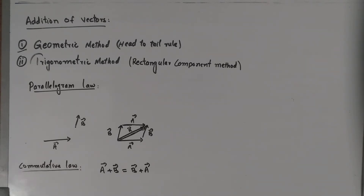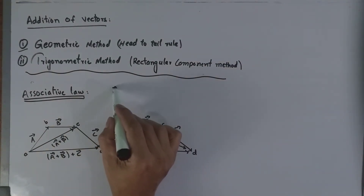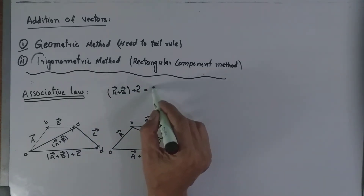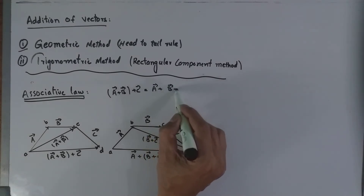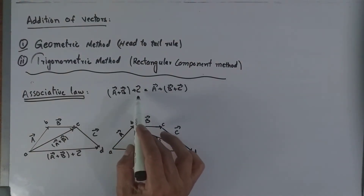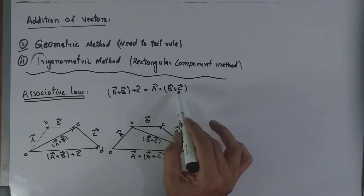Another law we will discuss is the associative law of vector addition. We will also later find the magnitude of the resultant vector using the law of cosines. The associative law states that (A + B) + C equals A + (B + C). Whether we add A and B first and then C, or add B and C first and then A, we get the same result in both cases.